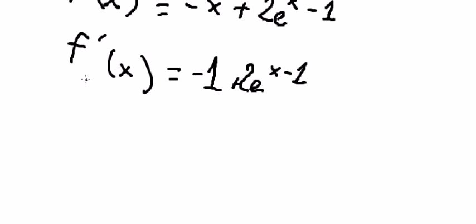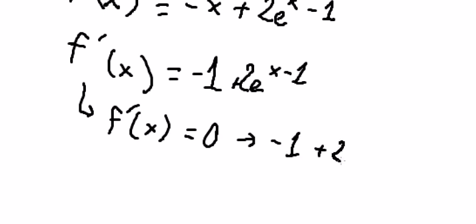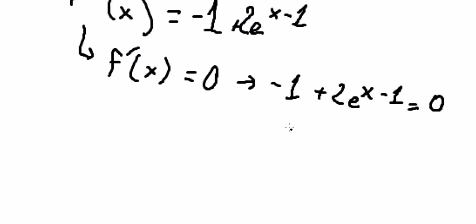So we put this one equals to 0. We put negative 1 go to the right and we divide both sides with 2.